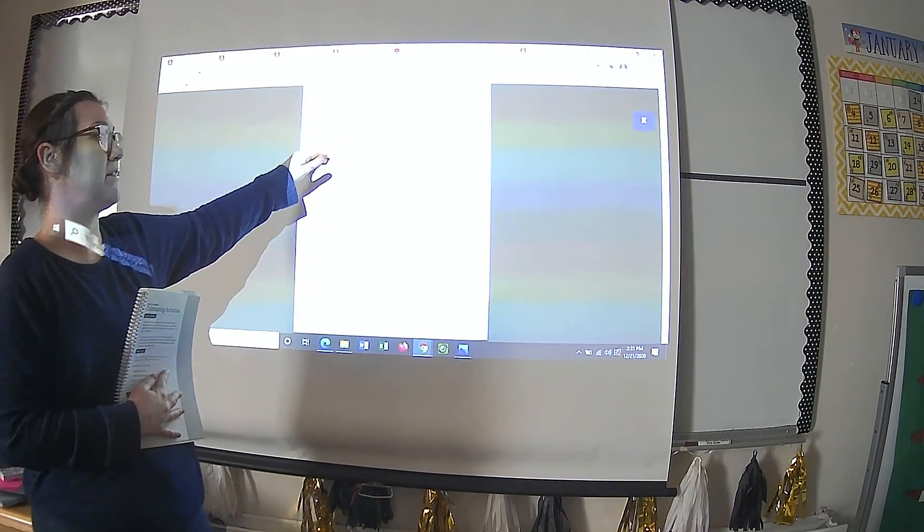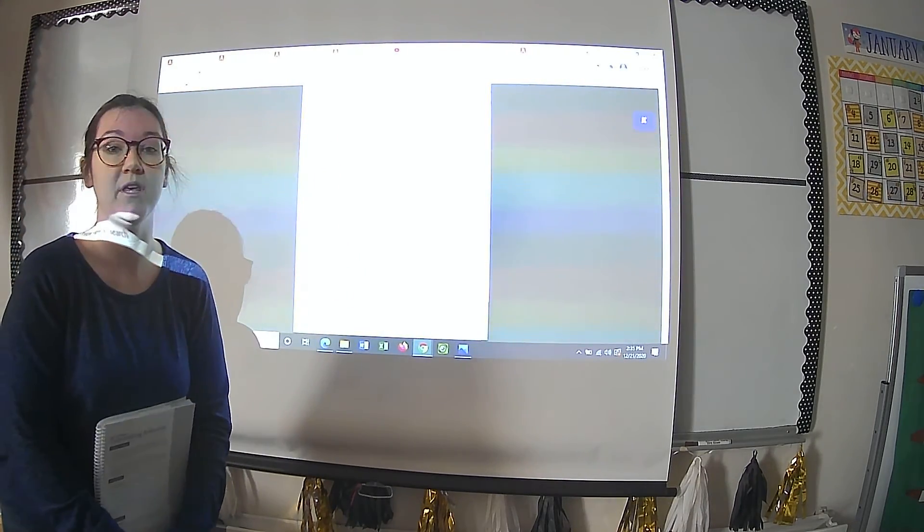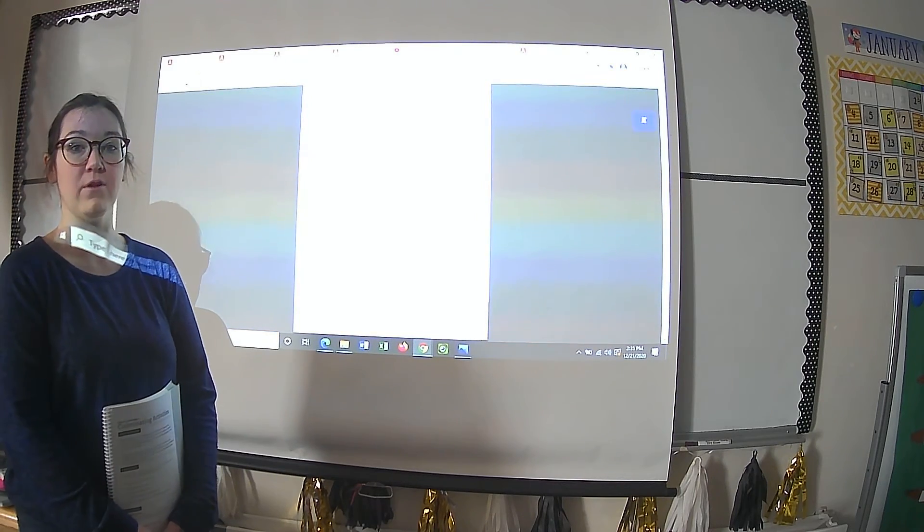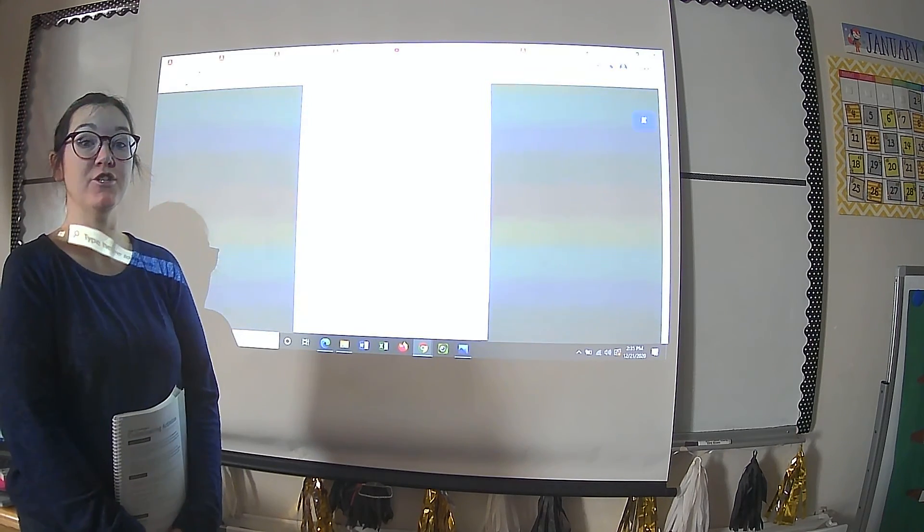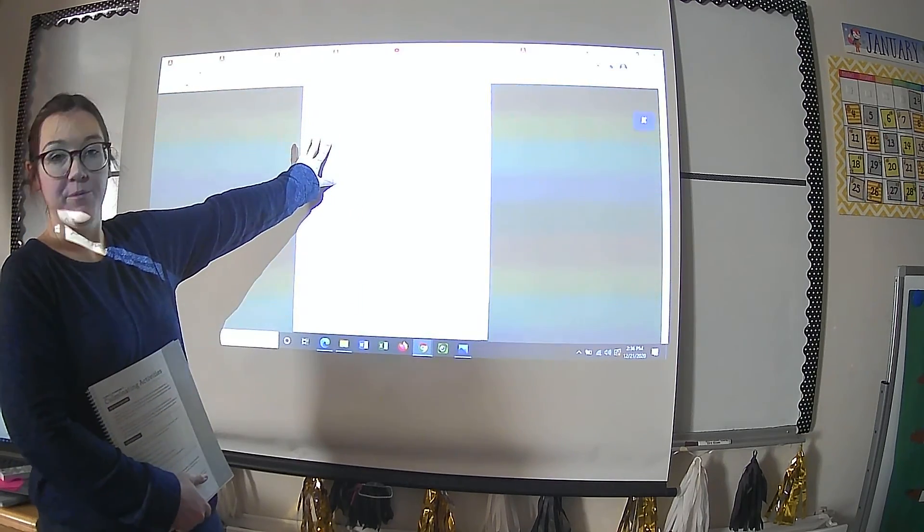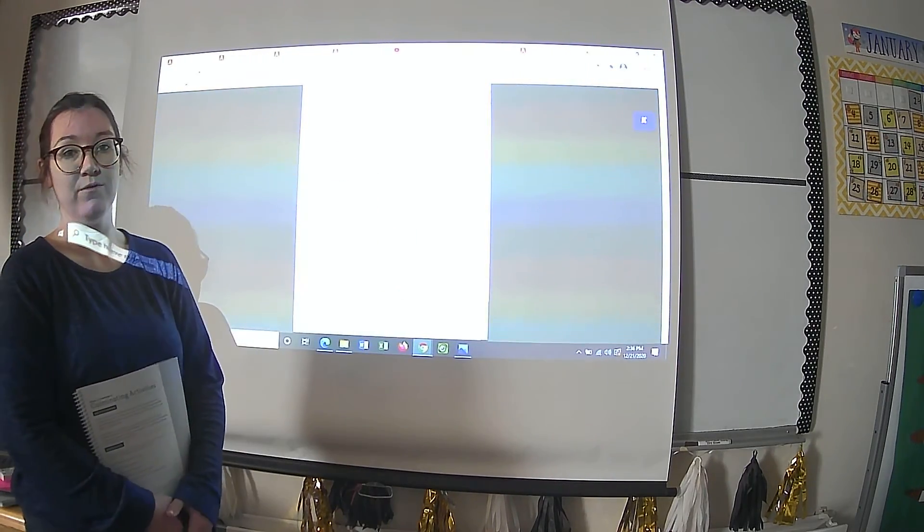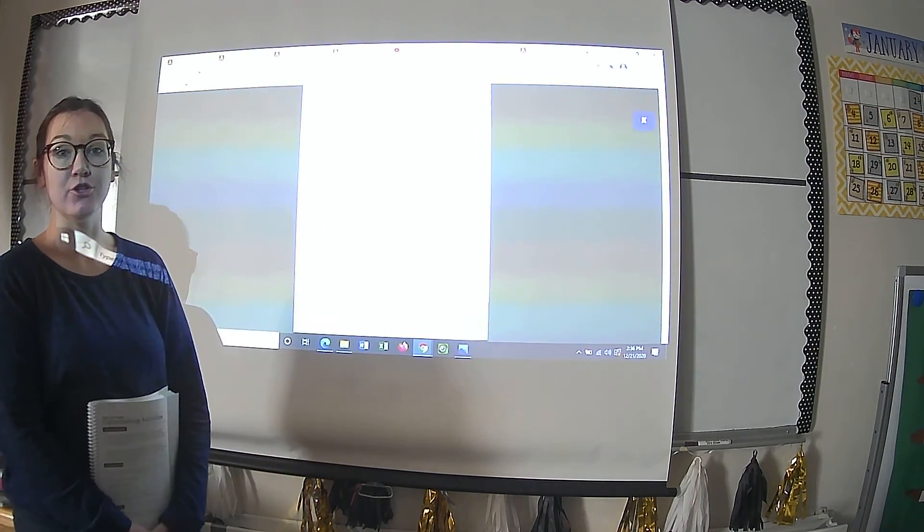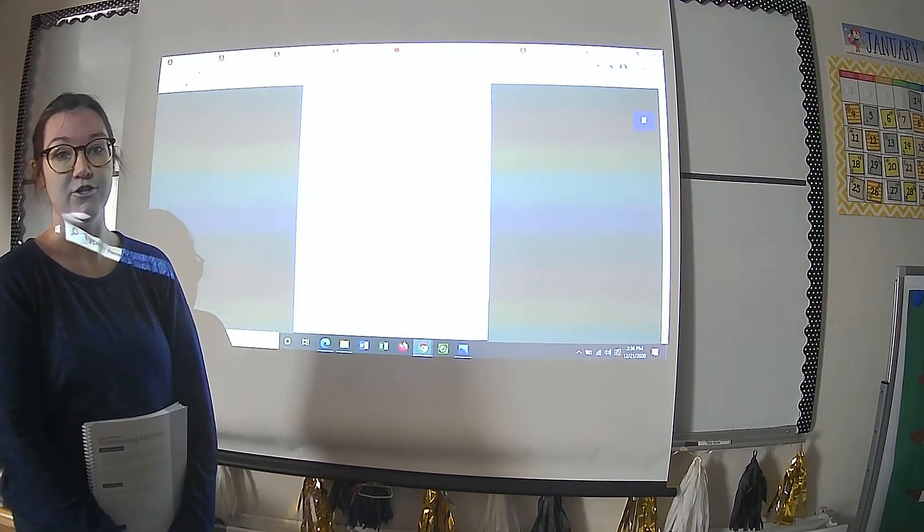And you're going to write the title on this first line. In the next couple of lines, you are going to tell me about the cycle that you have chosen. What are the stages of the cycle and what is happening in each of those stages? After you have told me about the life cycle you have chosen, then you're going to draw me a diagram or a picture of those different stages.